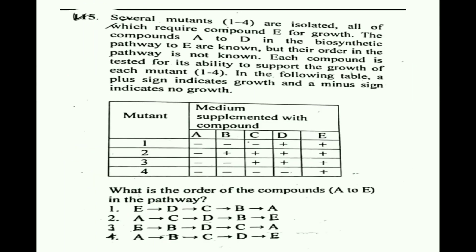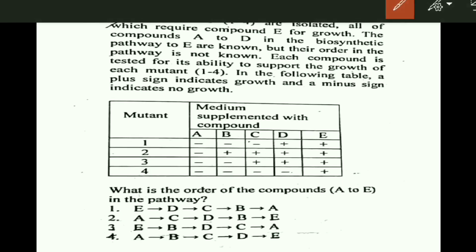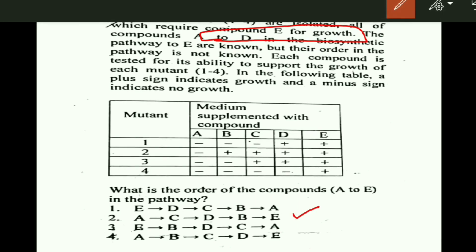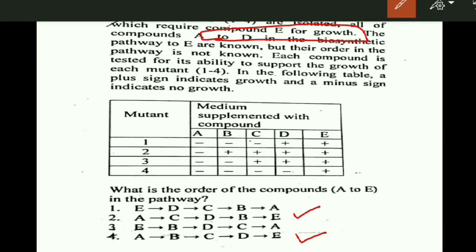The first question is from December 2018. Several mutants 1 to 4 are isolated, all of which require compound E for growth. This means compound E is found at the end of the pathway. The compounds A to D in the biosynthetic pathway to E are known, but their order in the pathway is not known.